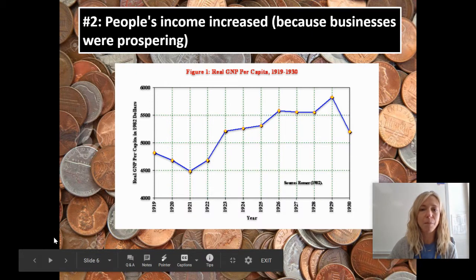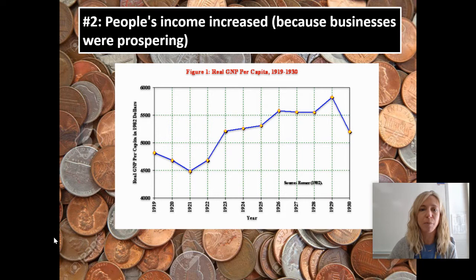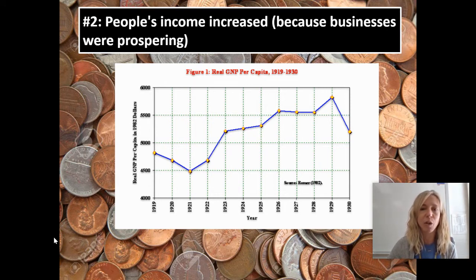Number two: since businesses are profiting as people buy these inventions, that's going to trickle down to workers and people's income will increase. You can see from this graph that real GNP — a measure of how much goods and services are being produced — is going up in the 1920s. So as people buy more things, businesses do well, wages go up, and people's income increases.